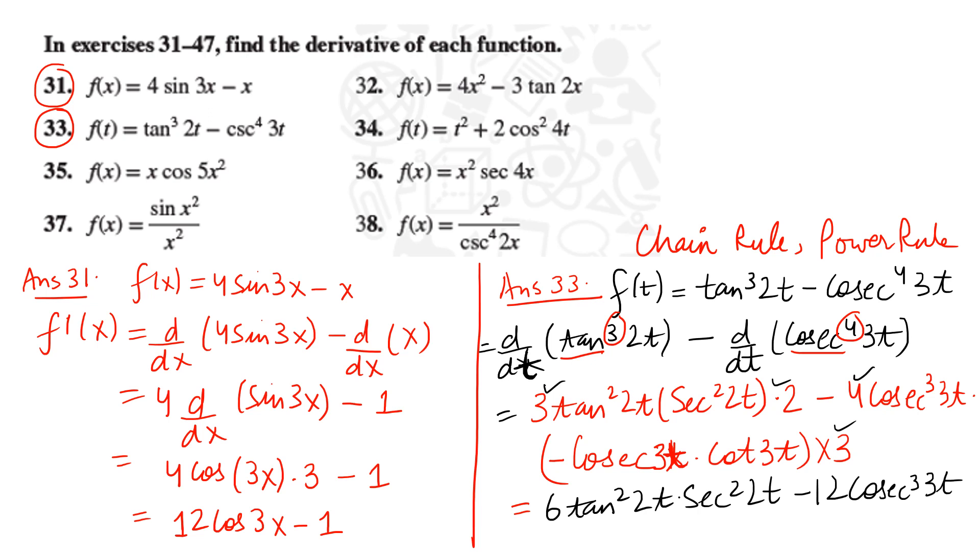Cosecant³(3t)—cube with one more will give you 4. And negative and negative also will give you positive. So you have to be very careful. Power increases here, so 4t, then cot 3t. So all of this finally you have. Check your calculations. This is how you do 31 and 33.